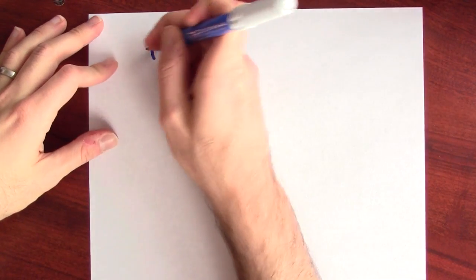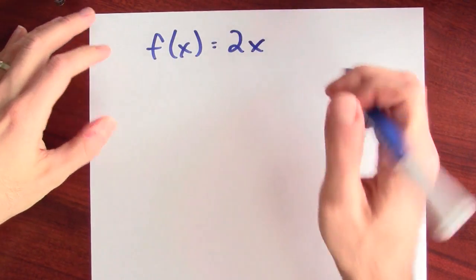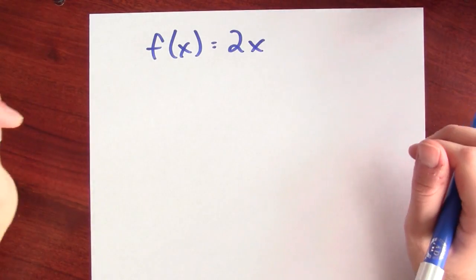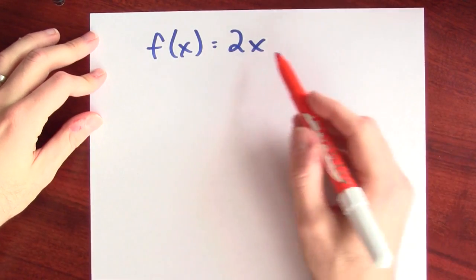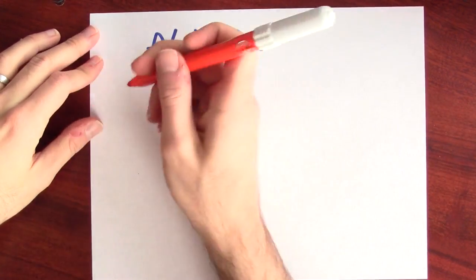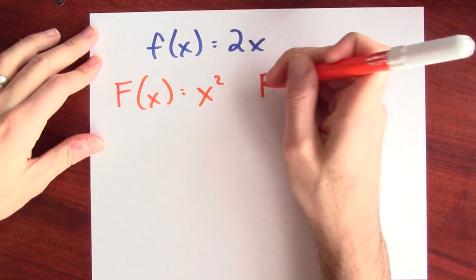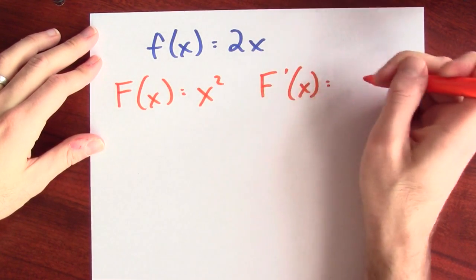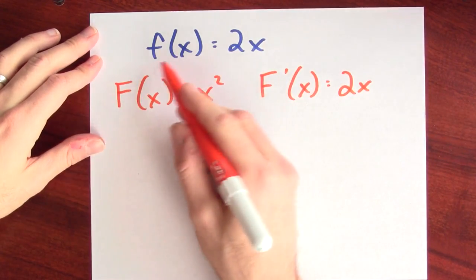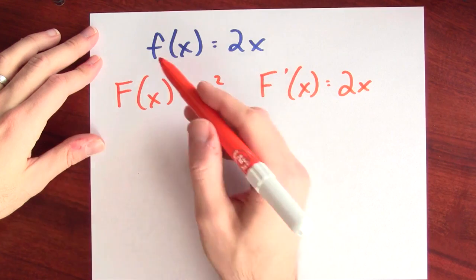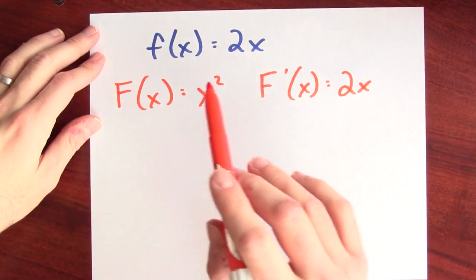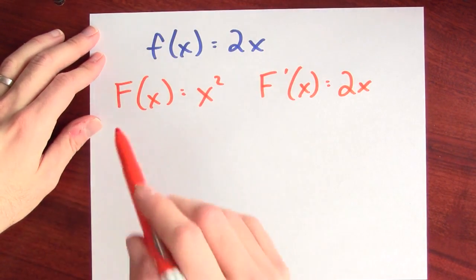Let's take a look at an example. Think about the function f(x) = 2x defined on the whole real line. Can you think of a function whose derivative is 2x? Here's an example: F(x) = x². If I differentiate that function, I get back 2x, which is little f. So the derivative of big F is little f — in other words, an antiderivative for little f is big F.